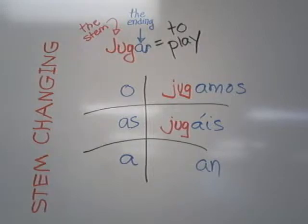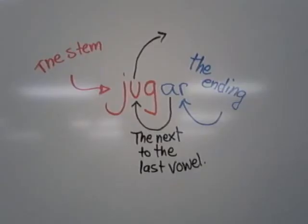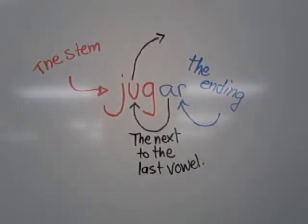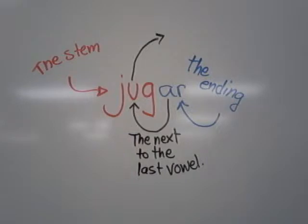The stem is the part that generally does not change, except in stem-changing verbs it changes just a little bit. The stem is j-u-g. The ending is the AR, or the o, as, a, amos, ais, an, which replaces it when you conjugate it. However, in a stem-changing verb, the stem also changes a little bit.